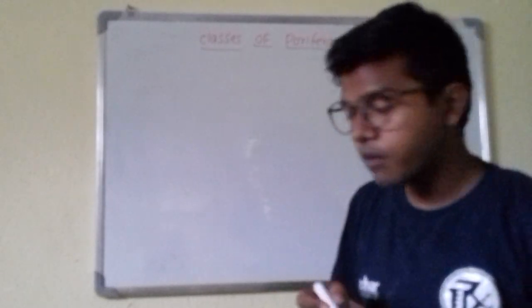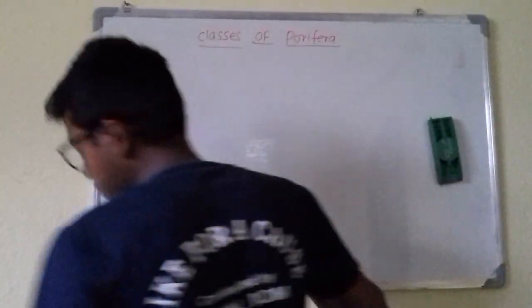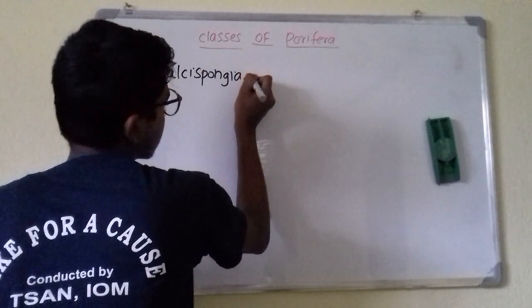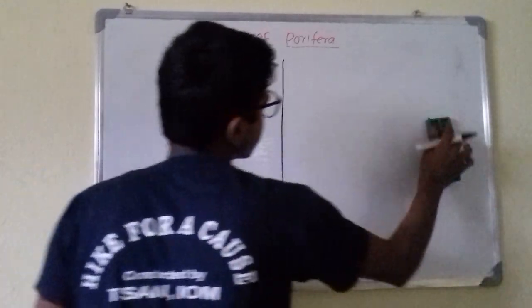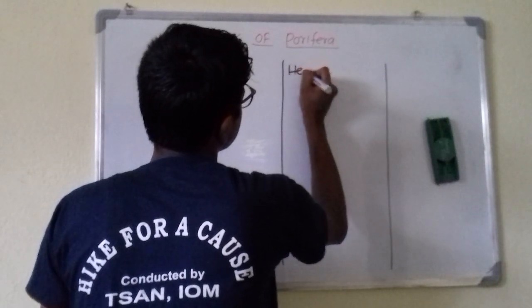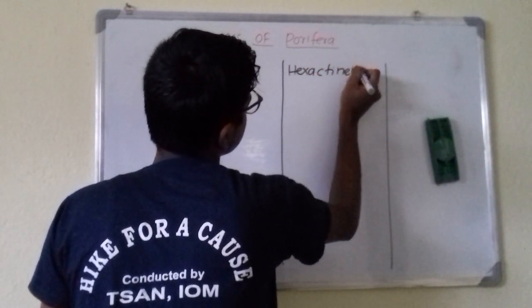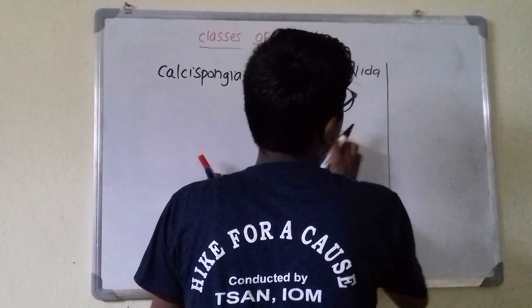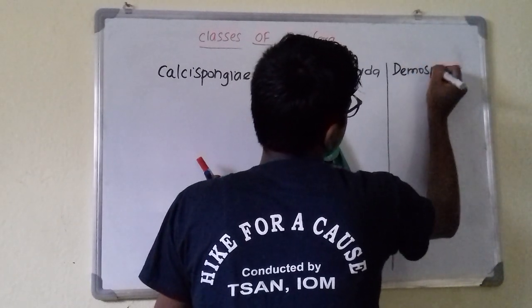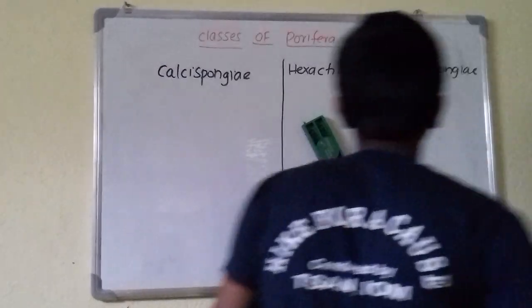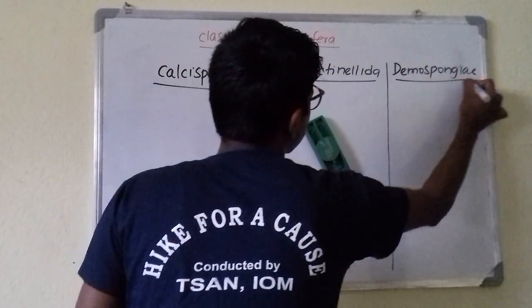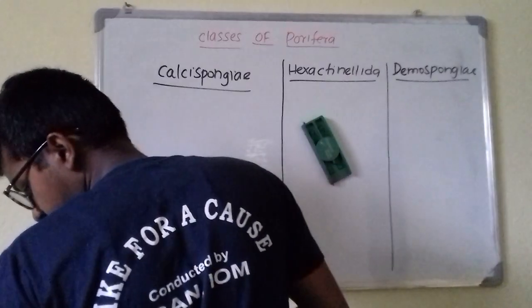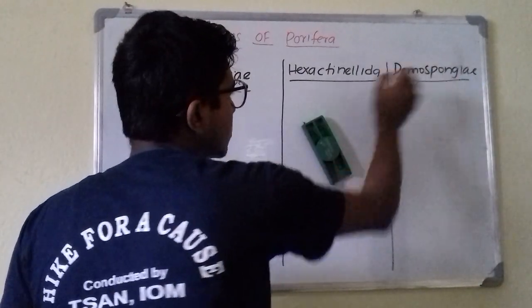Porifera is mainly divided into three classes. First is Calcispongia. Second one is Hexactinellida, and third one is Demospongia. So here are the three classes: Calcispongia, Hexactinellida (also known as Hyalospongia), and Demospongia.